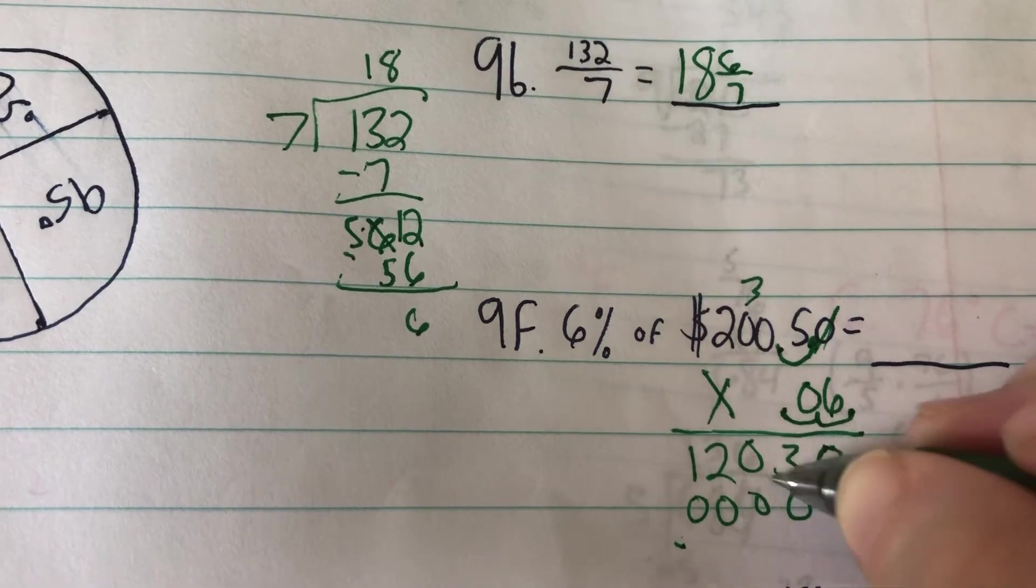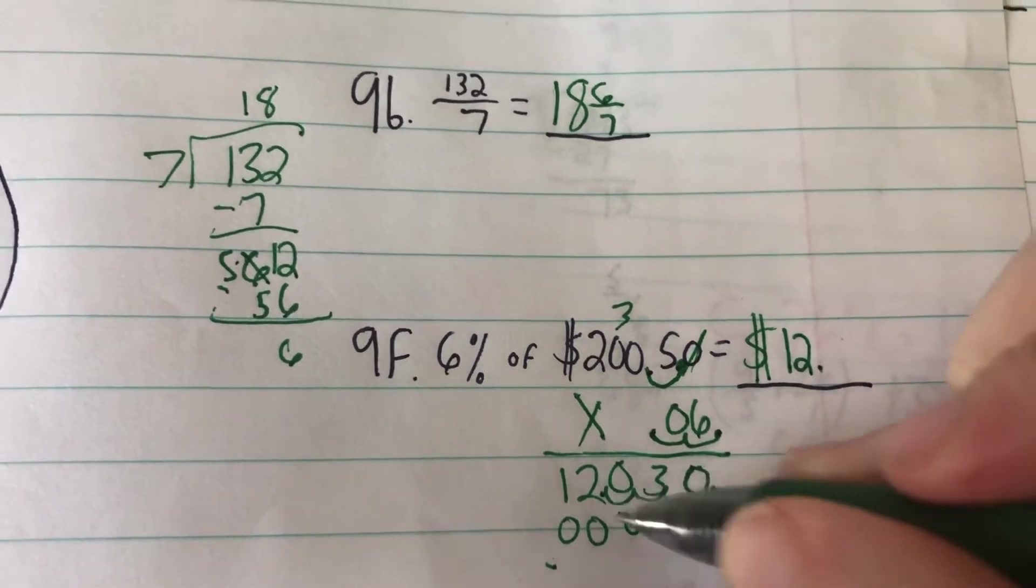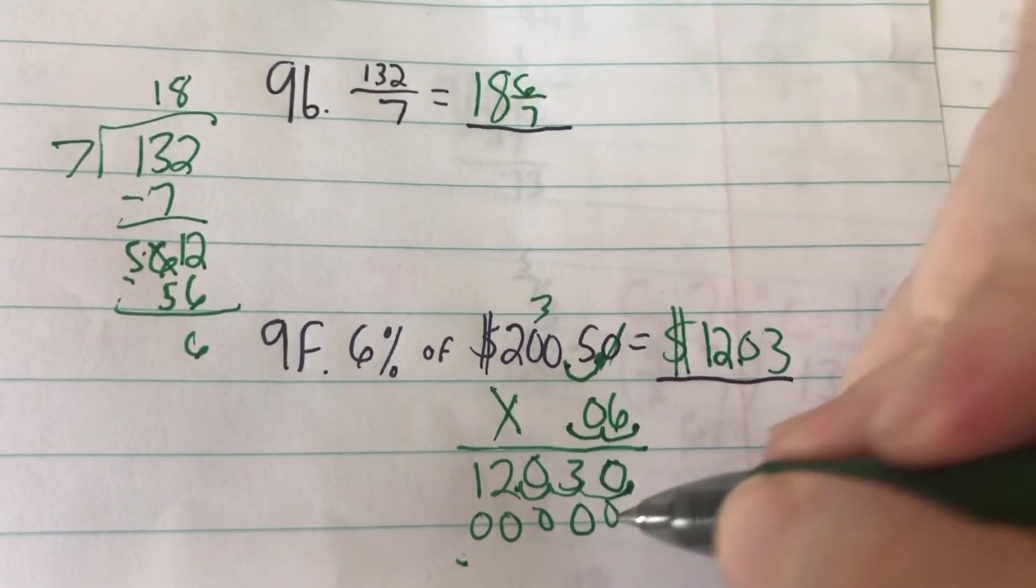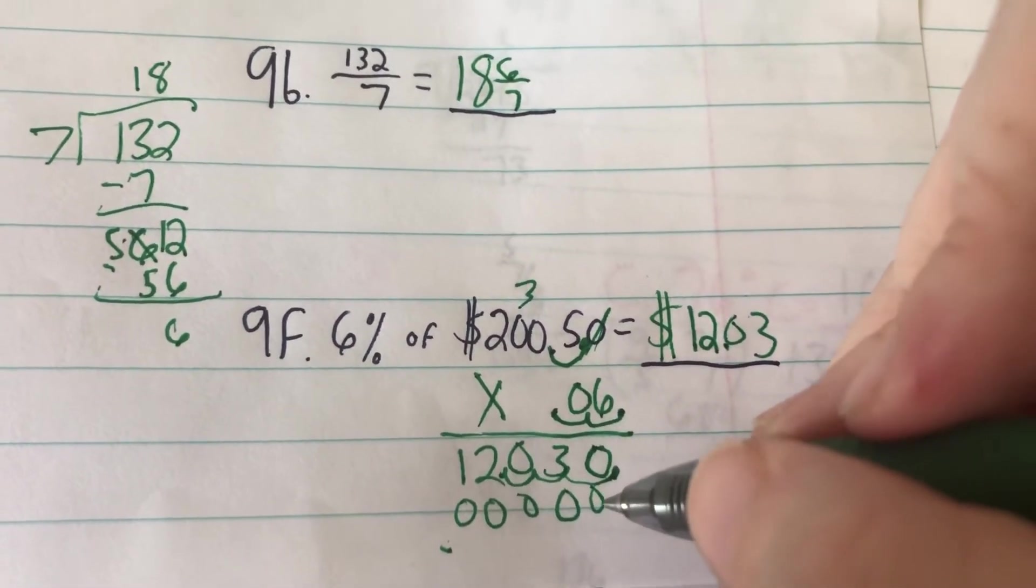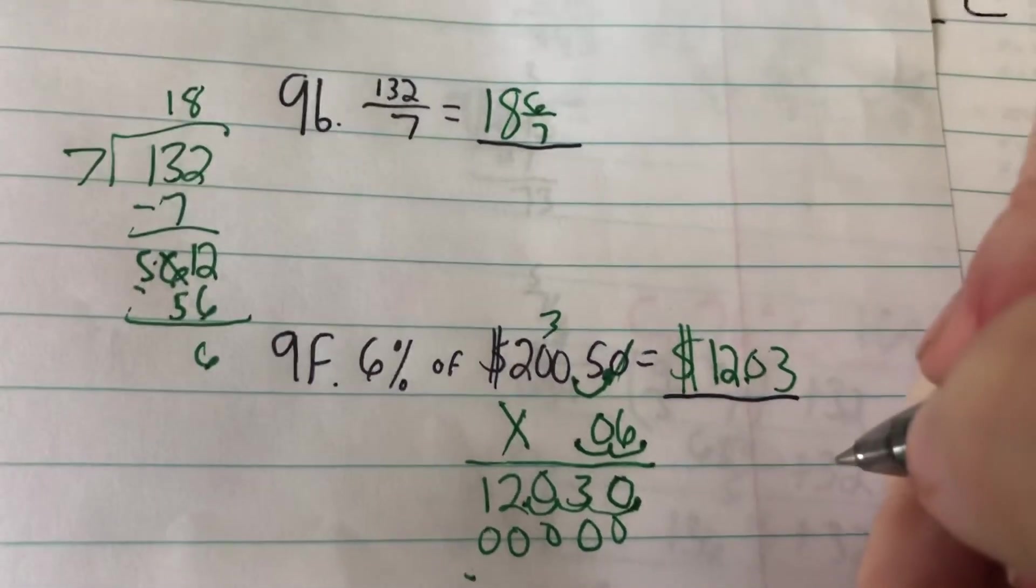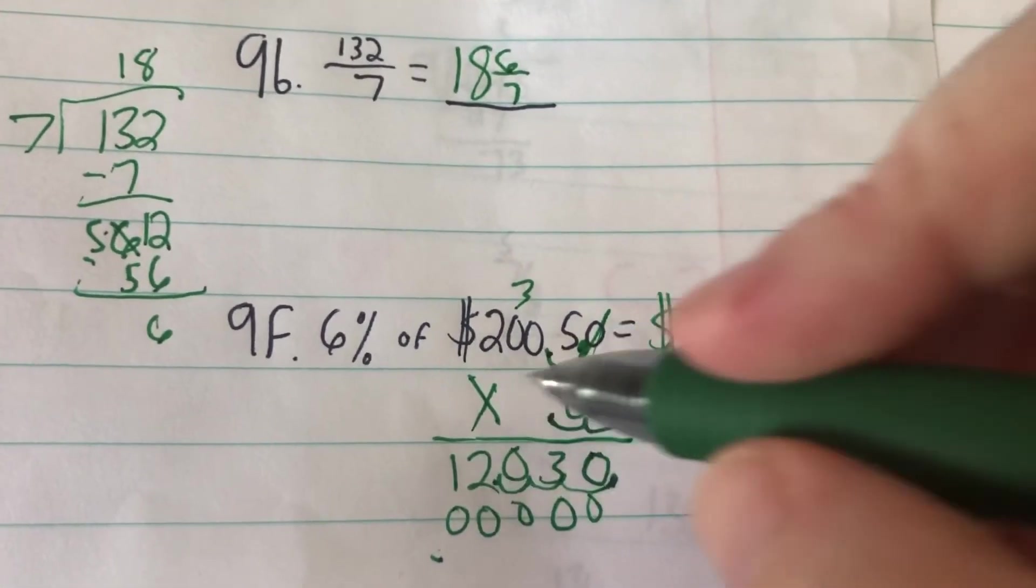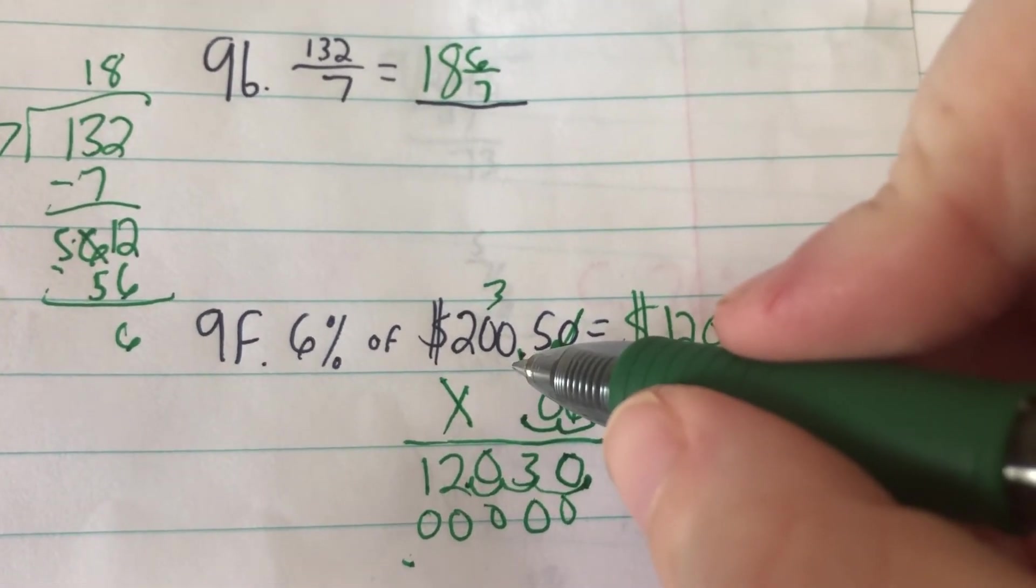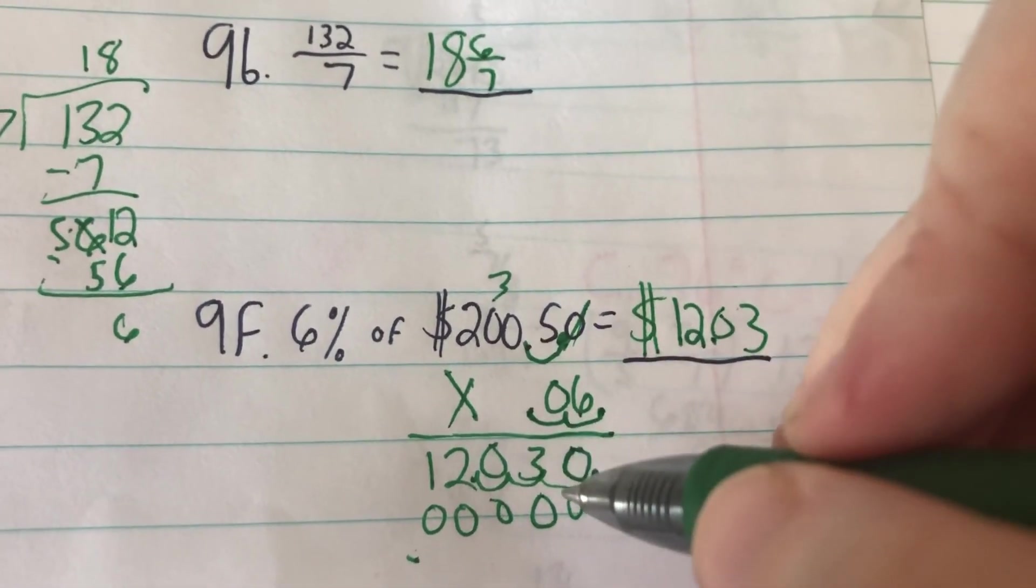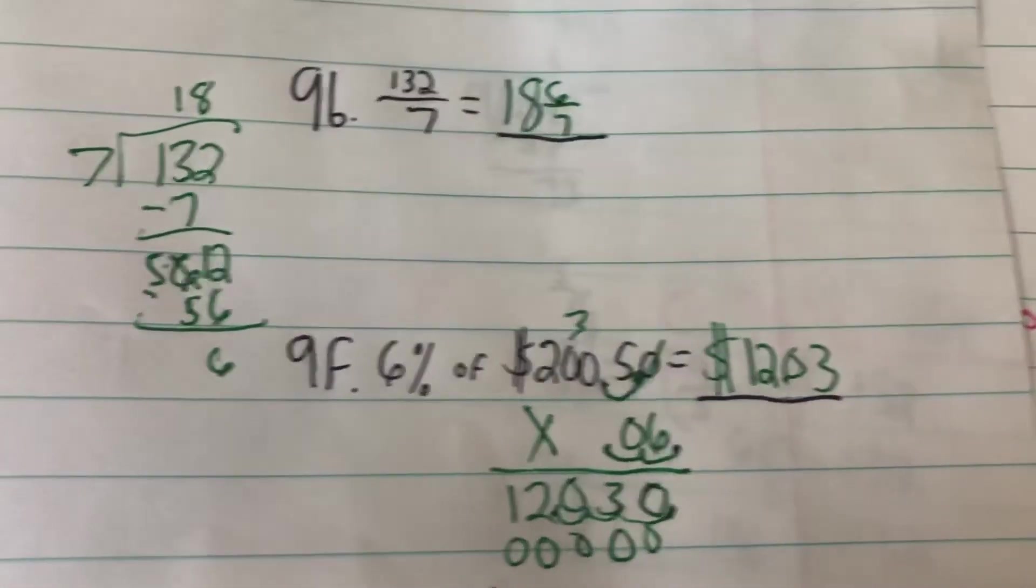So my answer is $12.03. Make sure you're paying attention to your decimal points because too many would put $120.30, and I should be able to think, well, 6%, that's less than 10%. 10% of $200 would be, I would just move this over and be $20. So I know that it's got to be less than $20. This one is, so that's logical.